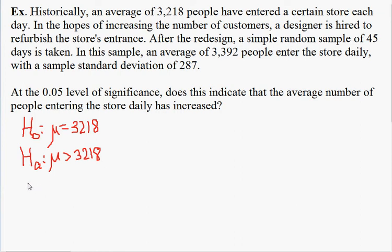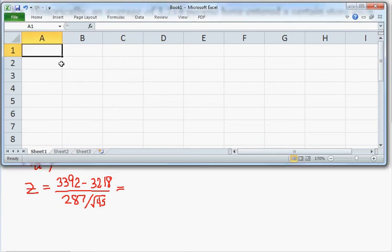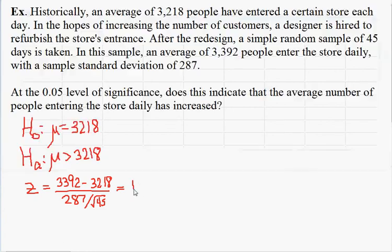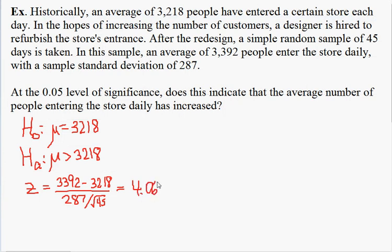The test statistic that we care about in this problem is z, and z is going to be equal to the observed average of 3,392 minus the expected average of 3,218, divided by the standard error for the average, which will be 287 divided by the square root of 45. And so that works out using Excel to help me with the calculations, so our z-value is 4.06699. This step is the exact same as what we did before when we examined this problem using critical values.